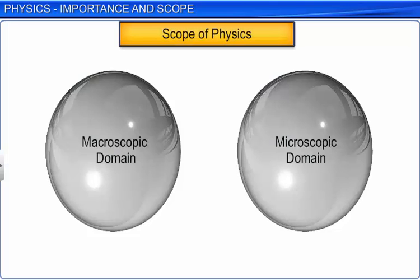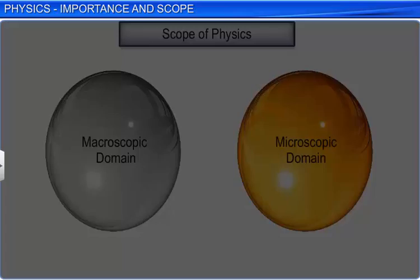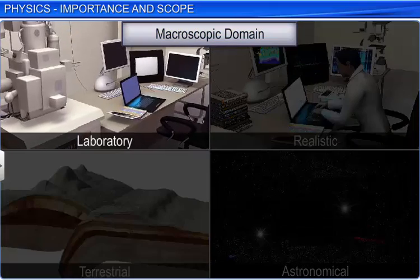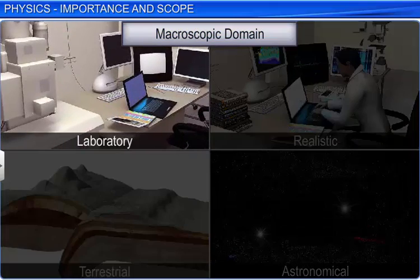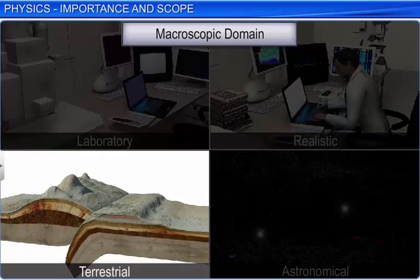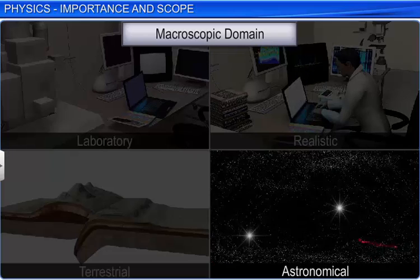The scope of physics can be divided into two major domains: macroscopic and microscopic. The macroscopic domain deals with phenomena at laboratory, realistic, terrestrial and astronomical scale.